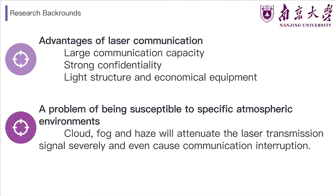Laser communication is a kind of wireless communication which uses optical signals as a carrier to transmit information directly in the atmosphere. With the advantages of large communication capacity and strong confidentiality, laser communication has a wide application potential in satellite-to-ground communication. However, satellite-to-ground laser communication has a problem of being susceptible to specific atmospheric environments. Compared to satellite-to-satellite laser links, satellite-to-ground laser links have to pass through the atmosphere, during which the laser transmission signal would be easily affected by atmospheric environments such as clouds, fog, and haze. This complex atmospheric environment will attenuate the laser transmission signals severely, and even cause communication interruption. As a result, in satellite-to-ground laser communication, we must take the influence of different atmospheric environments into consideration.